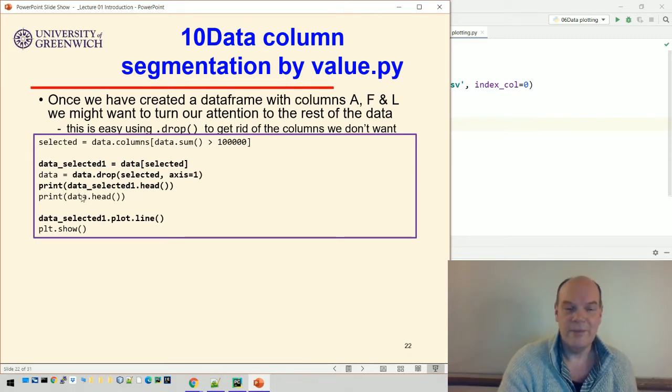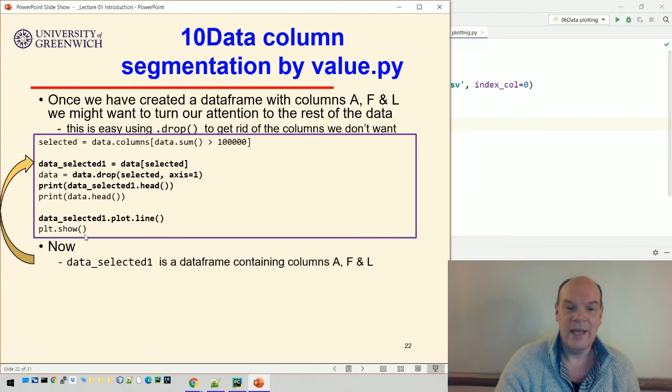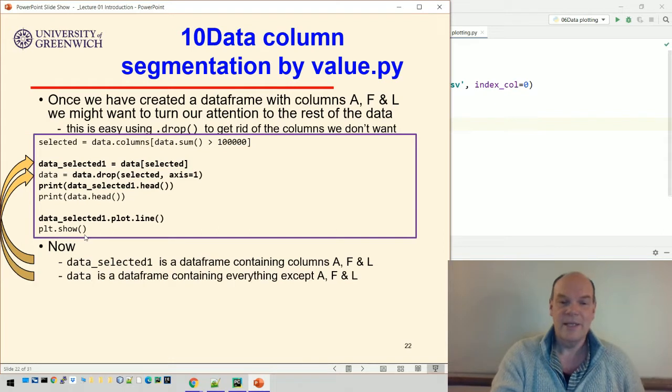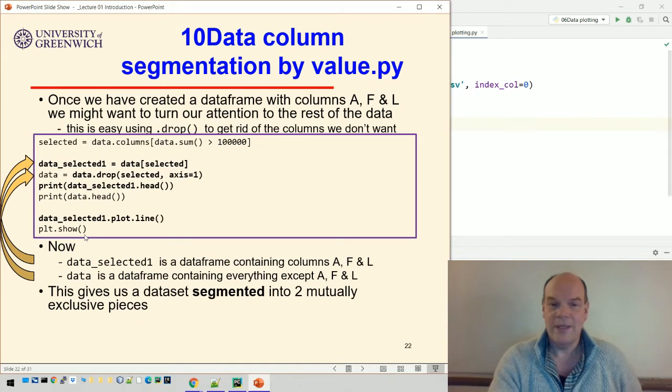And then we have two data frames now, data_selected_1, which is the high selling ones, and data, which is the rest. And then we can deal with those two things separately. So data_selected_1 just contains A, F, and L. Data is a data frame containing everything except those. And we've now got a data set segmented into two mutually exclusive pieces.